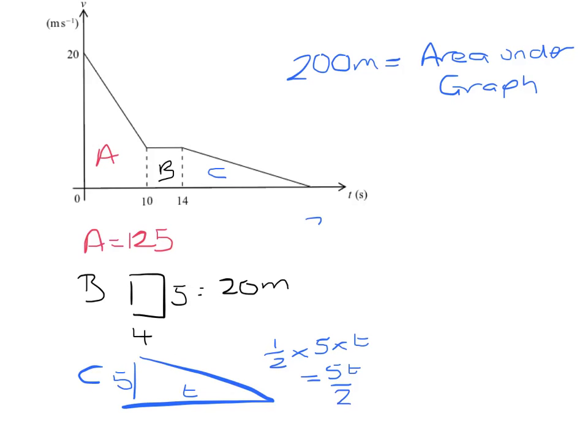So we have that 200 has to equal 125 plus 20 plus 5t over 2.